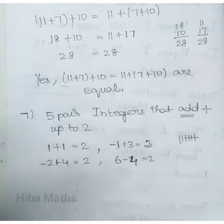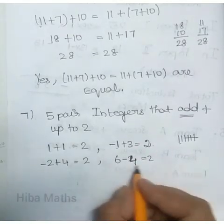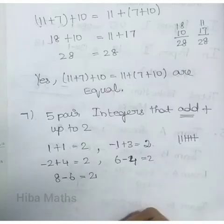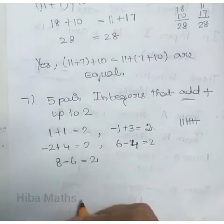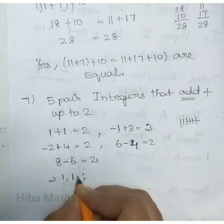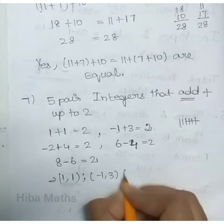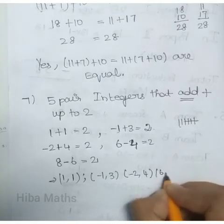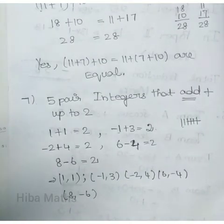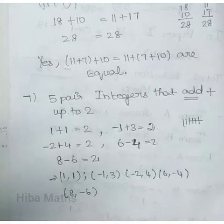1 plus 1 equals 2, minus 1 plus 3 equals 2, 6 minus 4 equals 2, minus 2 plus 4 equals 2, 10 minus 8 equals 2, 8 minus 6 equals 2. So we need 5 pairs of integers that add to 2.